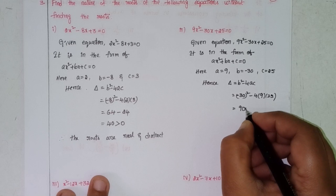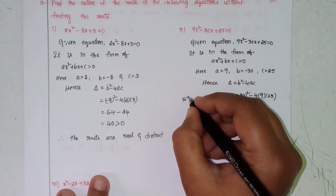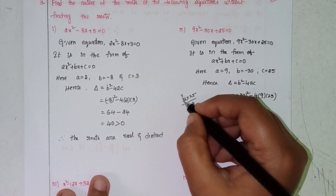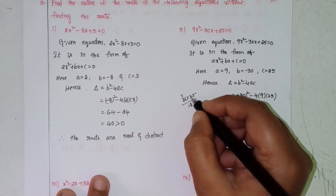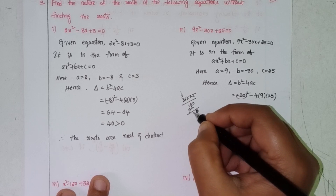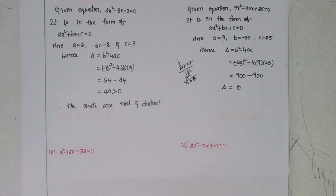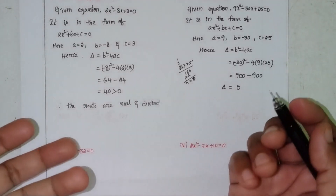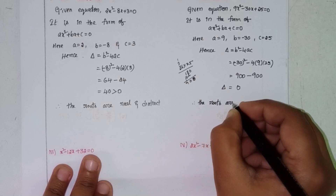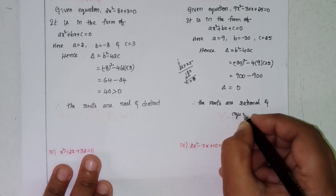(-30)² = 900, minus 4 × 9 × 25. 4 × 9 = 36, and 36 × 25 = 900. So delta = 900 - 900 = 0. Delta equals 0, therefore the roots are real and equal.